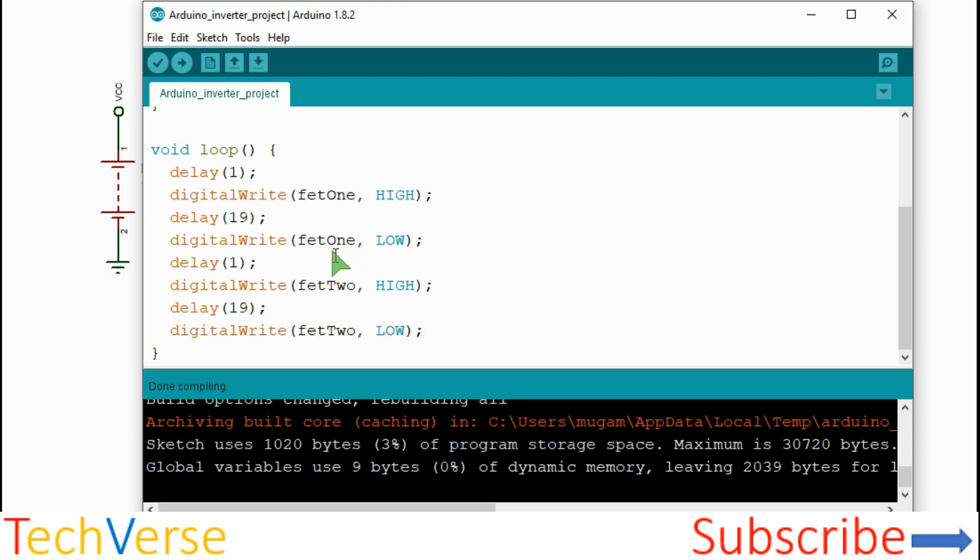Okay, then you go and turn on the second MOSFET. You can tweak these properties to alter the output frequency. Like the parameters are shown, the frequency should be about 60 hertz if I'm not wrong.